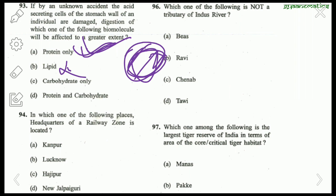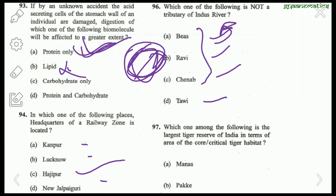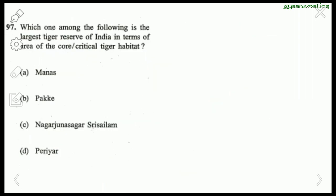In which place is the headquarters of a railway zone located? Hajipur is the headquarters of a railway zone; Kanpur, Lucknow, and New Jalpaiguri are not. Next: Which is not a tributary of the Indus River? Beas, Ravi, and Chenab are all tributaries of the Indus; Tawi is not a tributary of the Indus. So the answer is Tawi.